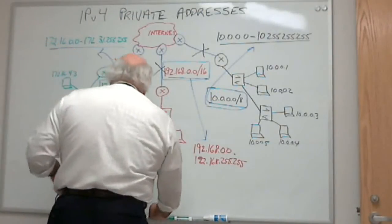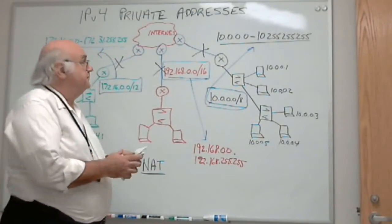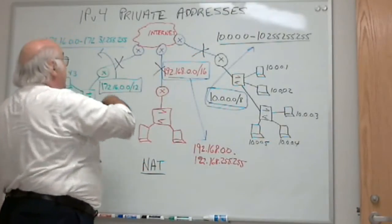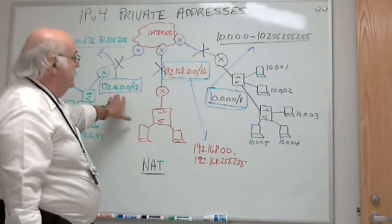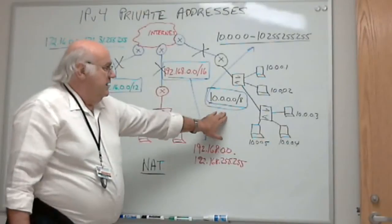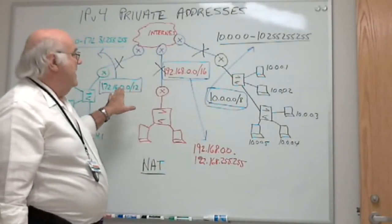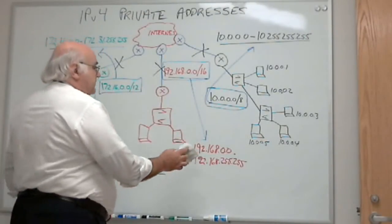Now, there's one other group of addresses I want to mention. Make sure you copy these down, especially these three. These three blocks right here. Those are the private addresses. Write that down.